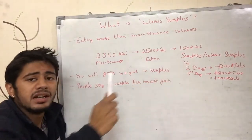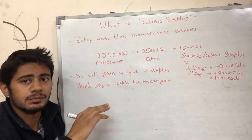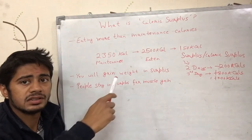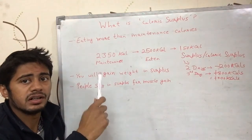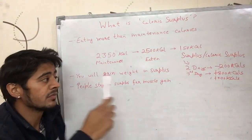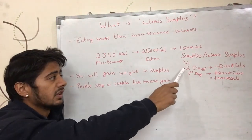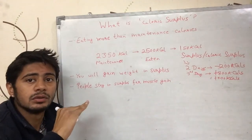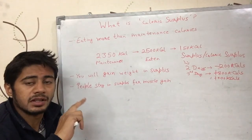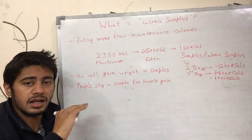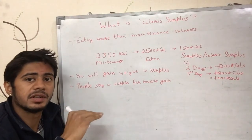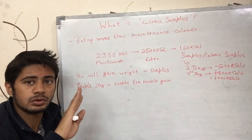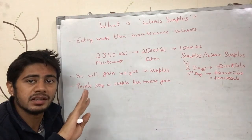As I have given examples of maintenance calories in the video, such as calorie surplus and calorie deficit — for two days, if I ate 200 calories less than my maintenance calories each day, in total I ate 400 calories below my maintenance calories over those two days.